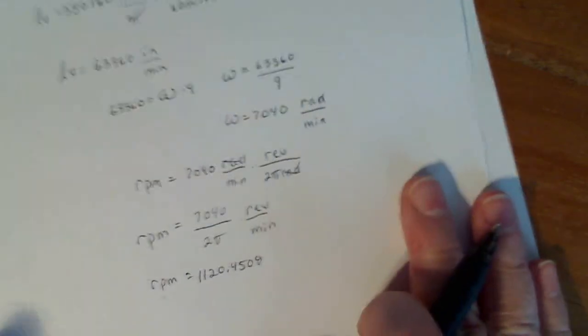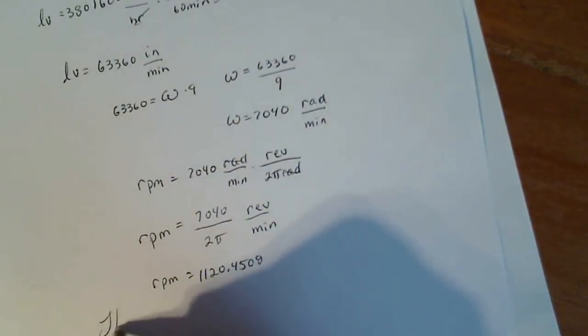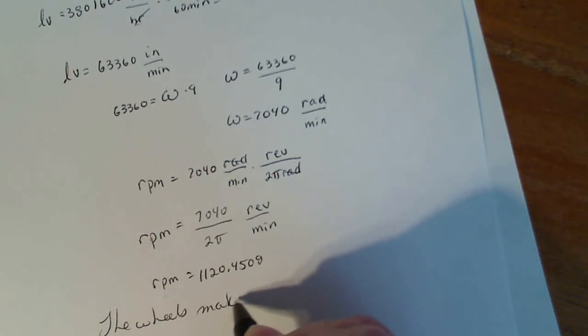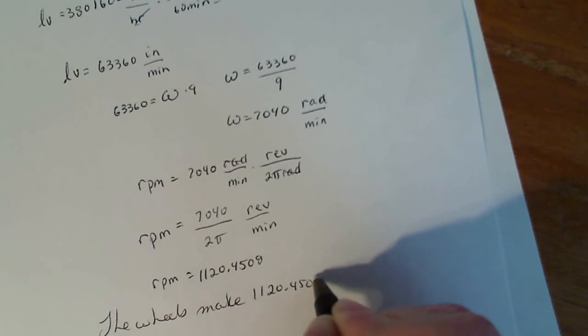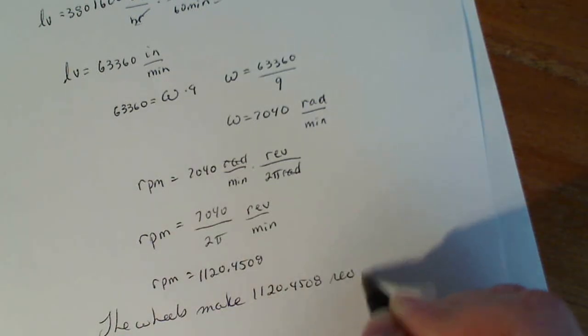So I would say, write it in complete sentence, the wheels make 1,120.4508 revolutions per minute.